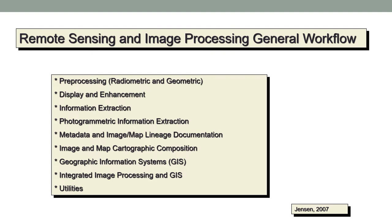We will focus on how this pre-processed image can be displayed on a computer monitor and enhanced for image interpretation. Towards the end of this lesson, we will get into information extraction, where you will perform an unsupervised classification on a Landsat image. Later in the course, once you have a land cover map developed from a Landsat image through image classification, you can extract photogrammetric information by measuring distances or areas of features of interest.